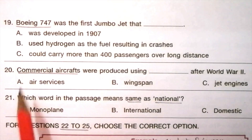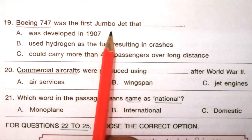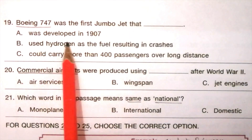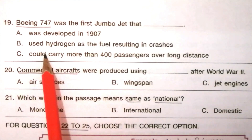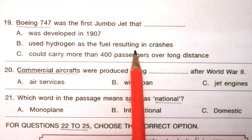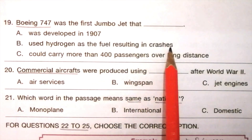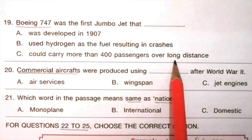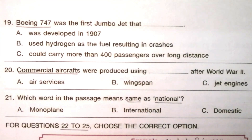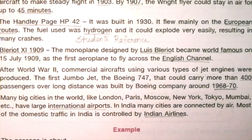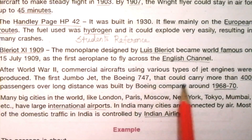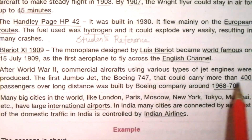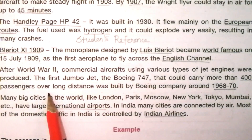Question 19: Boeing 747 — A) was the first jumbo jet developed in 1907; B) used hydrogen as fuel resulting in crashes; C) could carry more than 400 passengers over long distance. The answer is C. The answer is given here: the first jumbo jet, the Boeing 747, could carry more than 400 passengers over long distance.